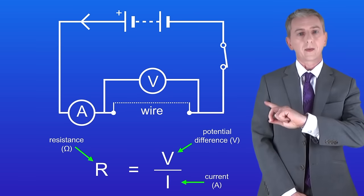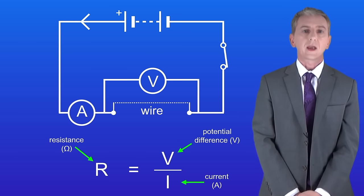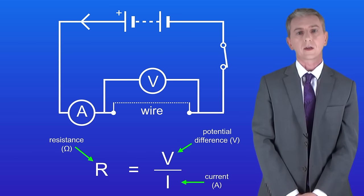So here's the equipment that we're going to use. We've got a battery, an ammeter, a voltmeter and a length of wire. We'll be using the ammeter to measure the current in the circuit and the voltmeter to measure the potential difference across the wire.